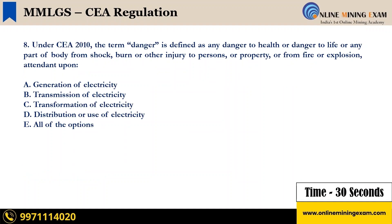Next question: under CEA 2010, the term 'danger' is defined as any danger to health or danger to life or any part of body from shock, burn or other injury to persons or property or from fire or explosion attendant upon — A) Generation of electricity, B) Transmission of electricity, C) Transformation of electricity, D) Distribution or use of electricity, E) All of the options. Your time starts now.